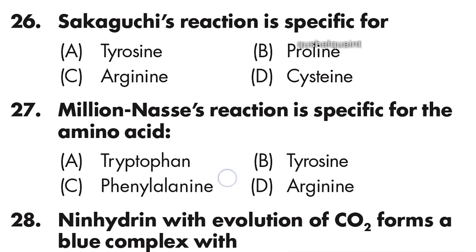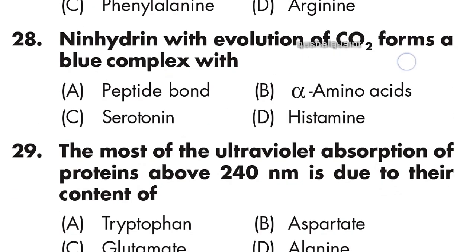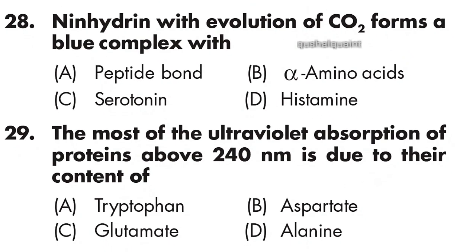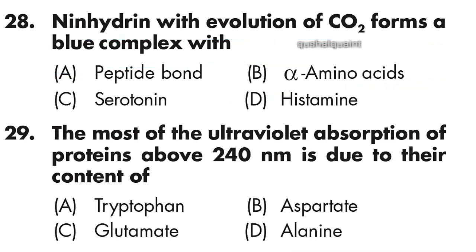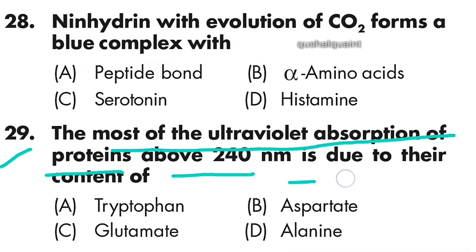Millon's assay reaction is specific for tyrosine — option B is right. Question 28: Ninhydrin with evolution of CO2 forms a blue complex with — option B is right — alpha amino acid.